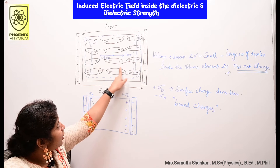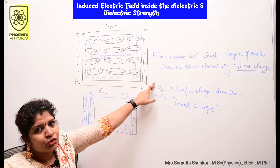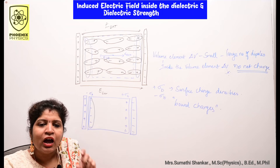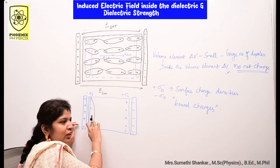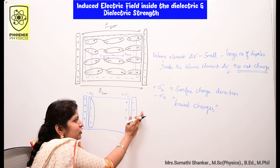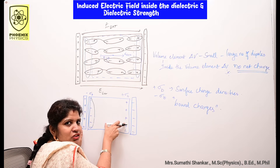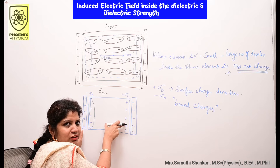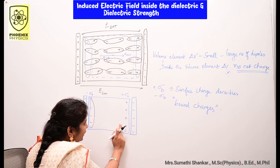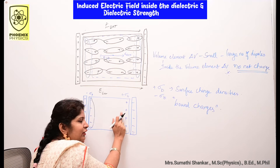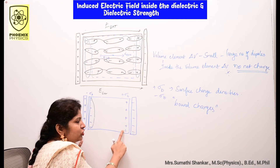So the net charge is zero inside the volume element. We have unneutralized positive and negative charges at the right side and left side of the surface. These unbalanced charges are induced charges due to the external electric field.